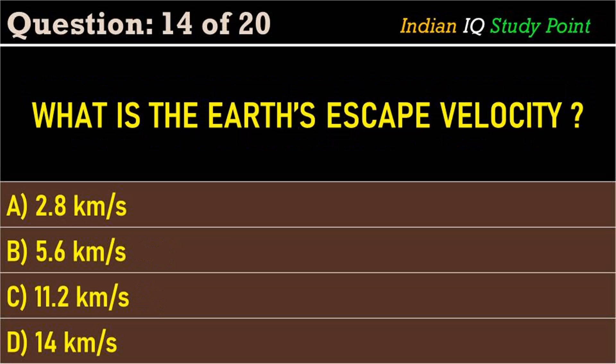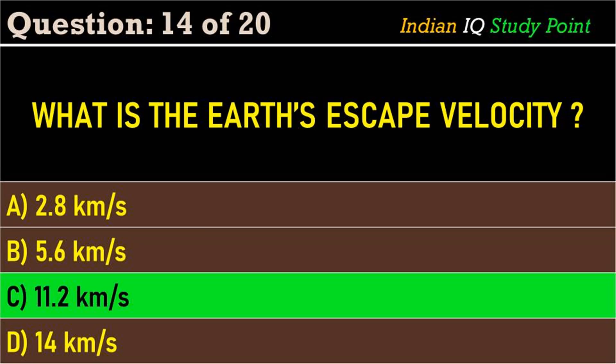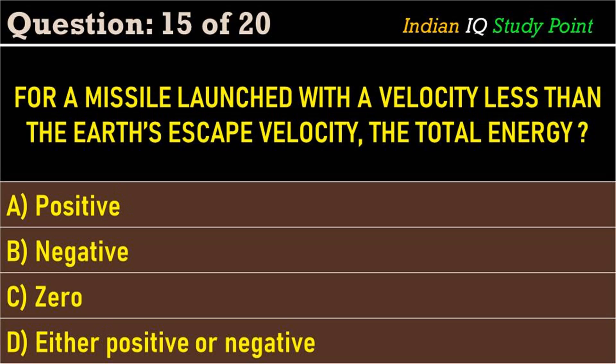Coming to the next question: what is the escape velocity? Option A: 2.8 kilometers per second. Option B: 5.6 kilometers per second. Option C: 11.2 kilometers per second. Option D: 14 kilometers per second. The correct answer is option C: 11.2 kilometers per second.